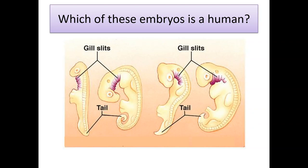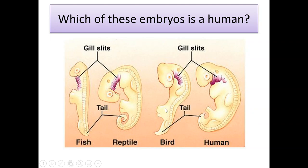Looking at those four embryos, it's very difficult to see which ones are human beings. And the reason is because the genes that control your anatomical development are very, very similar across different organisms. So fish, reptile, bird, and human — we all, at this stage, even though there's been a lot of differentiation, we've got where the head is and where the arms and legs would come out of, and where the tail and gills are as well.